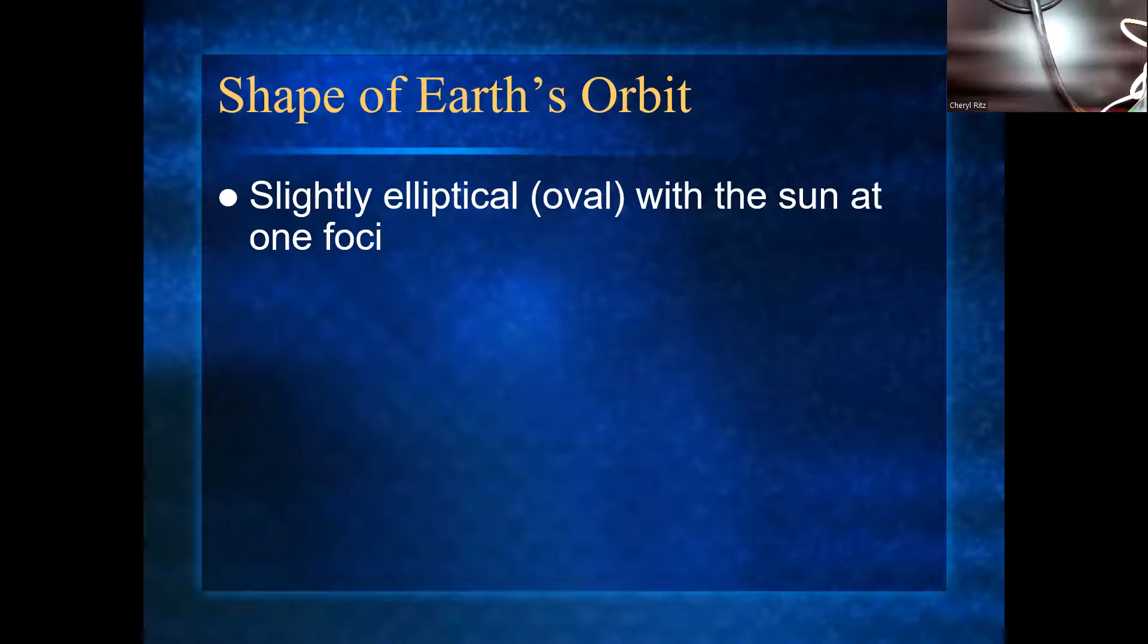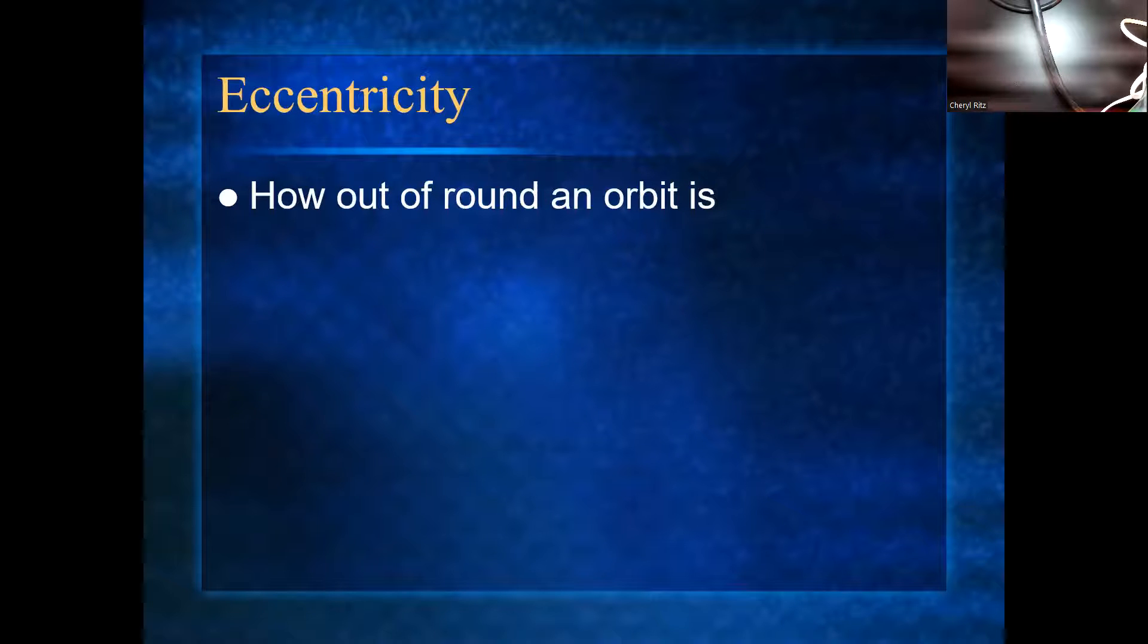There's some math we're going to do with this, and it's not that bad. I will help you out with it. So that's what a foci is. It's one of the centers. So eccentricity is the next vocab word. I'm not sure why that Y got stuck there underneath the word eccentricity. You might want to correct that.